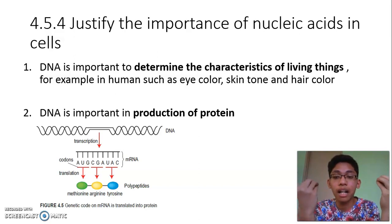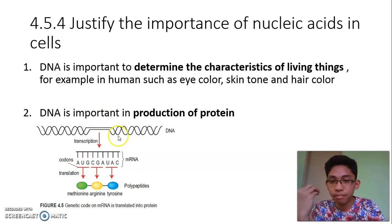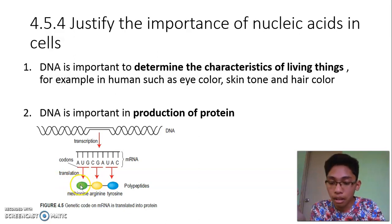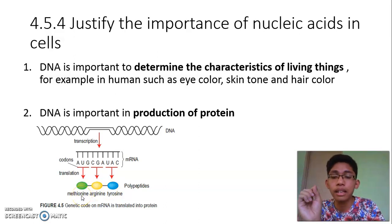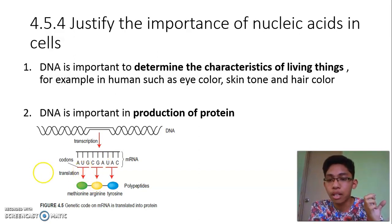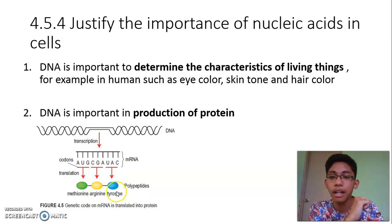DNA undergoes transcription — that process is called transcription — converting DNA into RNA. RNA is then translated into amino acids. There are many types of amino acids, and each sequence of amino acids will form different polypeptides. For example: methionine, arginine, and tyrosine.